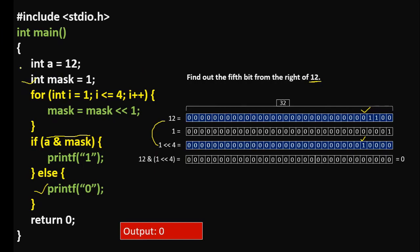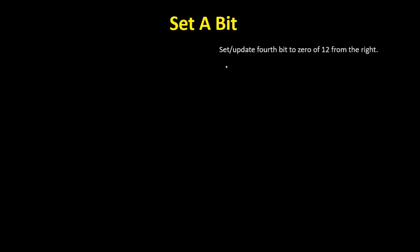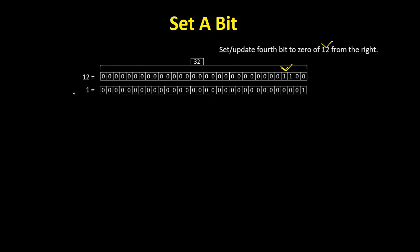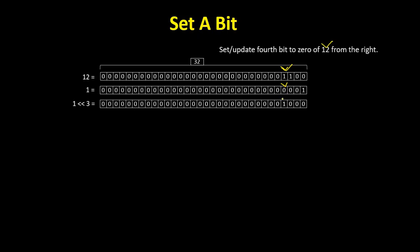We're using this mask and applying it to this integer to find out a specific bit value. Now let's see how we can set a bit to 1 and 0. We're going to set the fourth bit to zero of 12 from the right. If we convert 12 into binary, then we get this binary equivalent. This is the fourth bit, and our goal is to set this bit to zero. For that, first I'm going to declare a mask — let's say our mask is 1. Then we're going to move this 1 to the corresponding position where we want to set the bit to zero, using a left shift of 3. Then this 1 will move to that corresponding position.